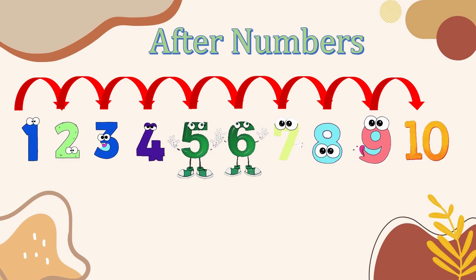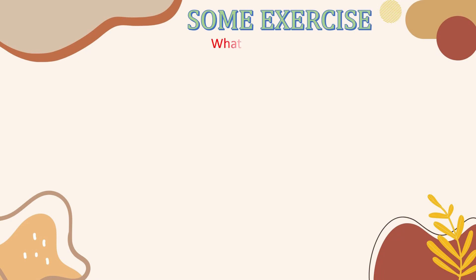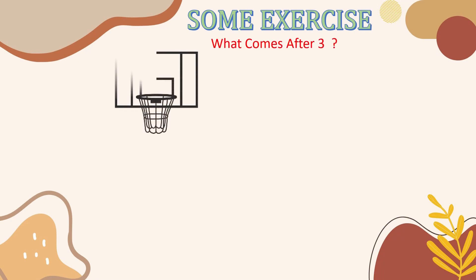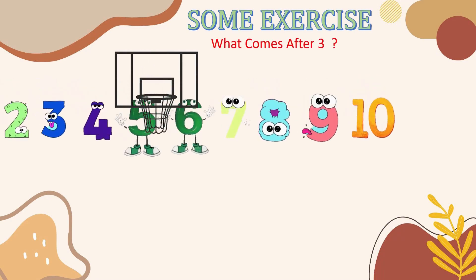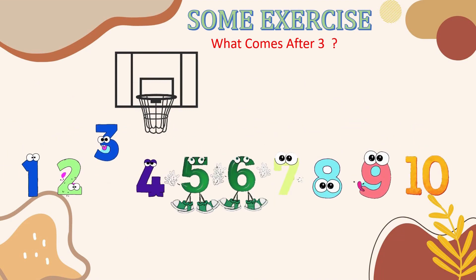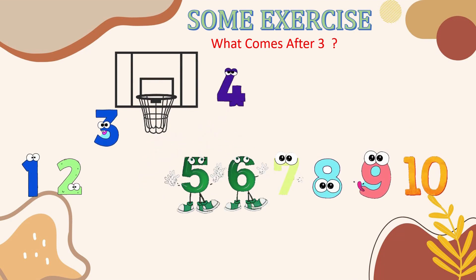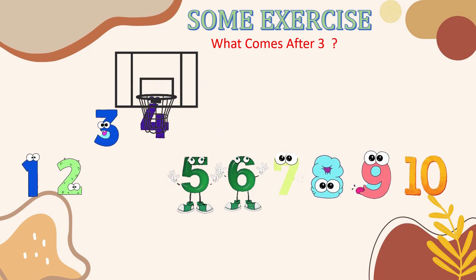Now we will do some exercise to understand what is after number. What comes after 3? First we have to write down the counting, find 3 and move forward towards right. This is 4, so 4 comes after 3.